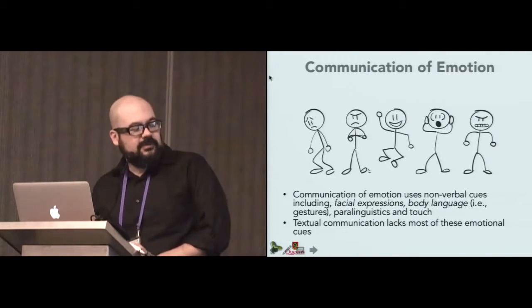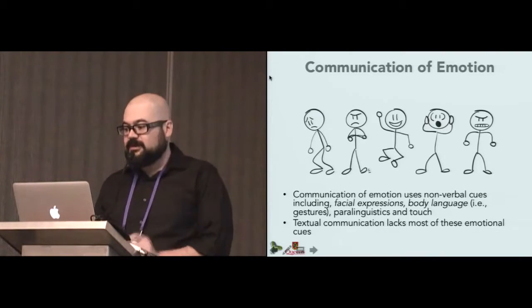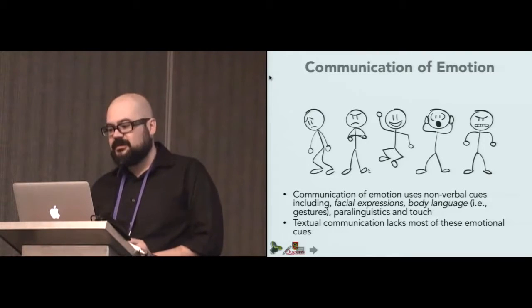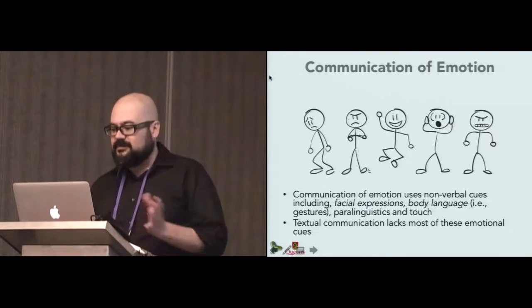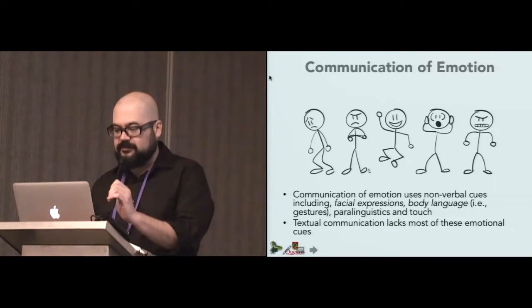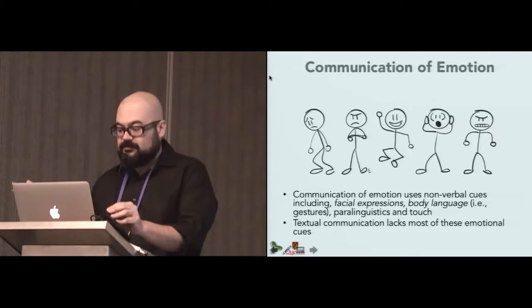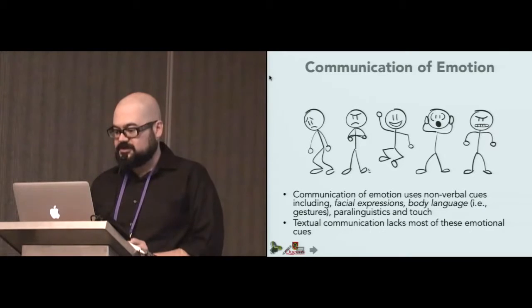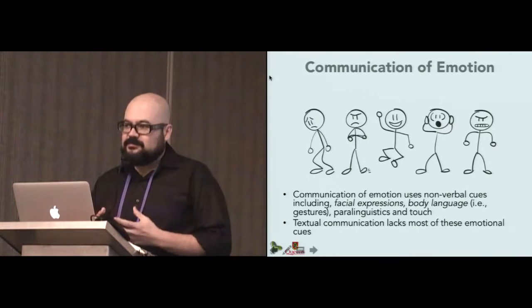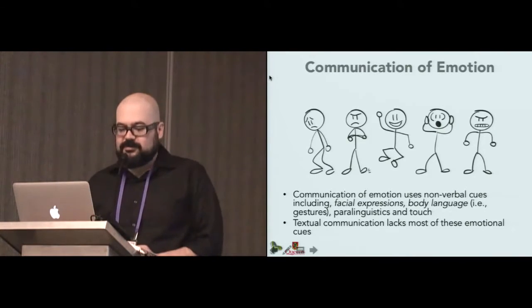Something which is important to have into account is that in human communication the expression of emotion is supported by non-verbal cues that include facial expressions and body language. And these are essentially shape transitions on parts of the body. And this also includes paralinguistic and touch. Textual communication, like when we are sending an SMS message, lacks all of these non-verbal cues.